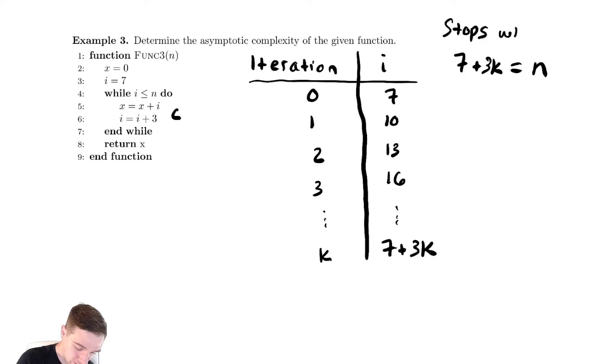It stops when that equation is true. So let's solve for the value that represents the number of iterations, which is k. So I'm going to subtract by 7 and divide by 3 and get k equals n minus 7 over 3.